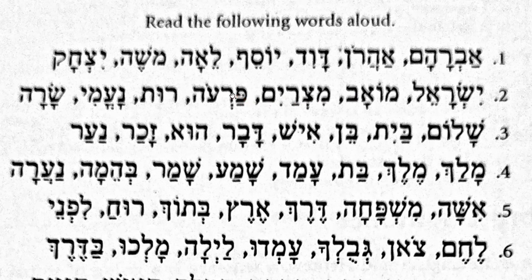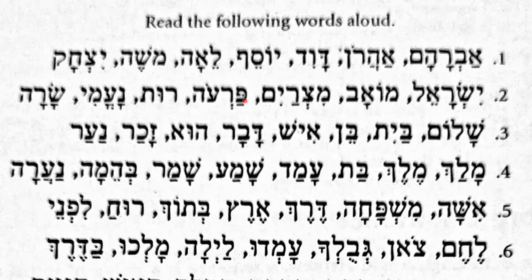Then Pharaoh. Pharaoh — we know Pharaoh, right? That's the name of the Egyptian ruler. Take note that if the Pei has a dot inside, the sound is like a 'P.' If there is no dot, it is like 'Ph' — Pharaoh. Pharaoh.